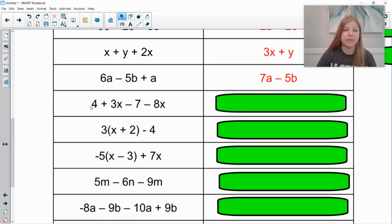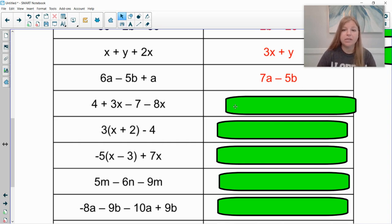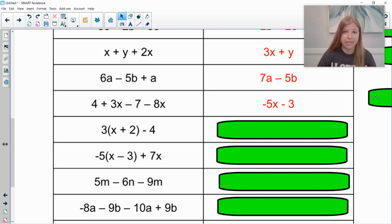The next one. 4 plus 3x minus 7 minus 8x. I can combine my 3x and my negative 8x. So think about it. What's 3 minus 8? It's negative 5. So that starts off as negative 5x. And then 4 minus 7 is negative 3. So my result is negative 5x minus 3.